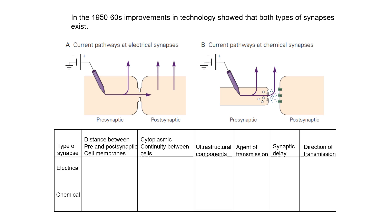As experimental techniques improved in the following decades, we learned more about synapses and came to know that there are actually both kinds of synapses present in the brain. Some synapses are electrical in nature, where the two neurons are directly connected to each other, and some synapses have chemical transmission, where the two neurons are not connected. Let's look at the differences between the two kinds of synapses in a bit more detail.